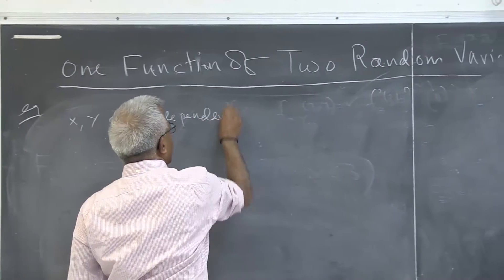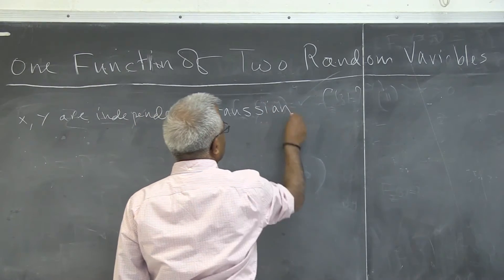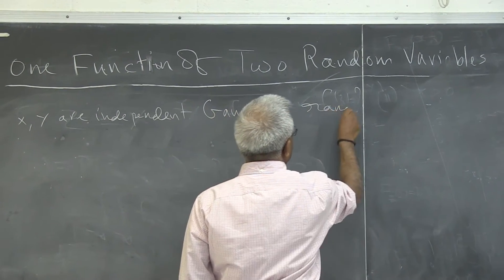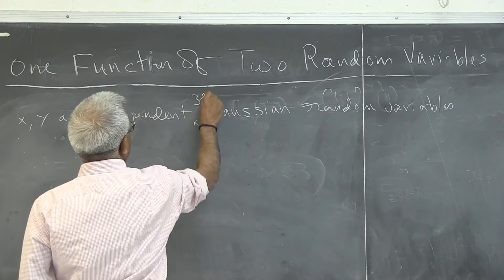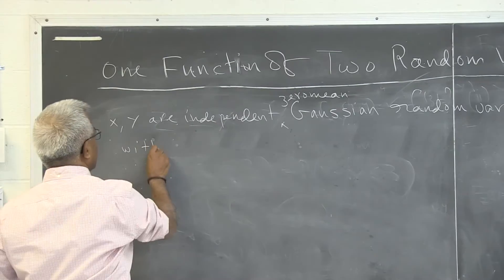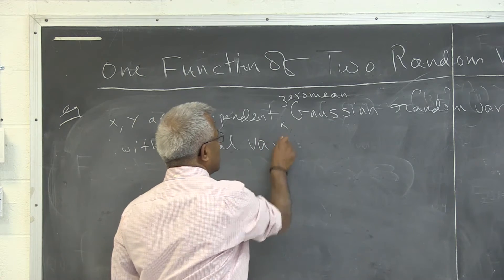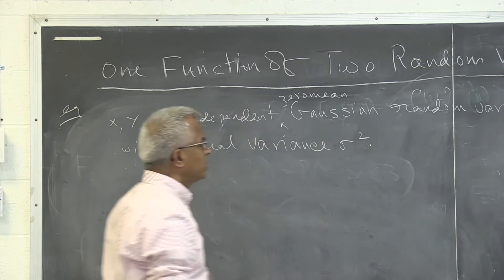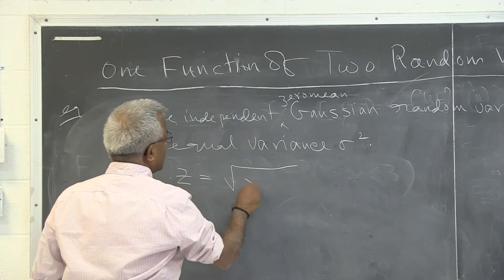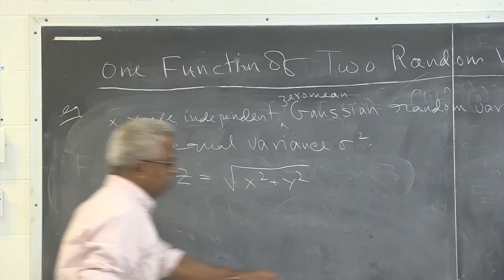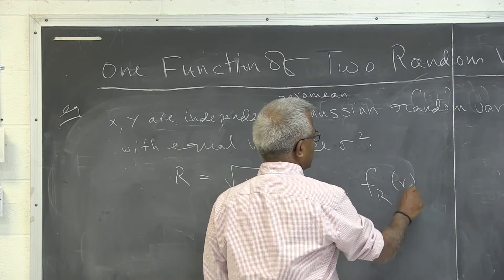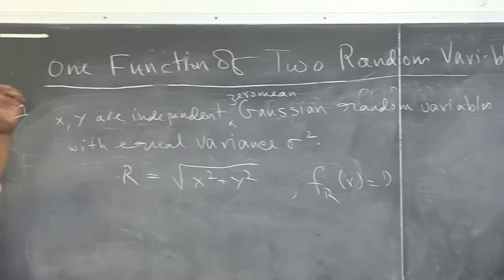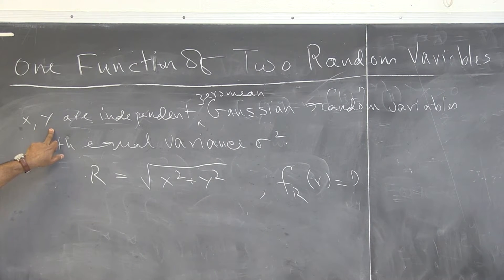We have independent zero-mean Gaussian random variables with equal variance sigma squared. We define r to be the square root of x squared plus y squared. The problem is to find the density function of r. This is a classic problem that comes up in wireless communications.